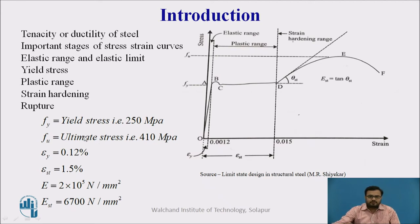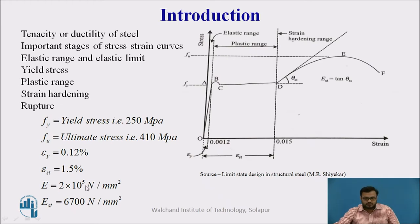Here are a few properties of mild steel. The yield stress is equal to 250 MPa, ultimate stress is equal to 410 MPa, elastic yield strain is equal to 0.12%, and EST — the strain at which strain hardening starts — is 1.5%. Young's modulus of elasticity is 2×10⁵ N/mm², and EST is generally equal to E/30, which gives approximately 6700 N/mm².